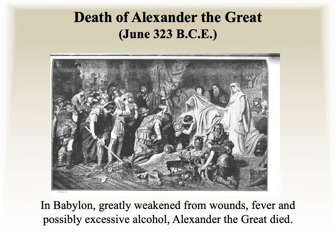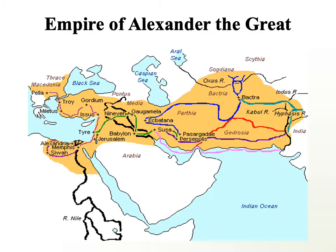They made their way back to Babylon, losing many men along the way — many of them in the Gedrosian Desert. After returning to Babylon, Alexander the Great died in June of 323 BCE, very young at 32 years of age. There is speculation about foul play, but it was likely a combination of factors: he had been greatly weakened from wounds, fever, and possibly excessive alcohol. Back then, commanding officers would have been on the front lines leading by example, and it had taken its toll. But this is what he left behind — the empire of Alexander the Great, up until this point the greatest empire the world had seen.